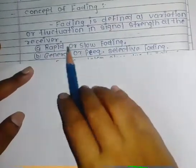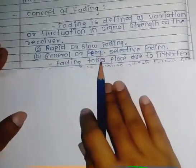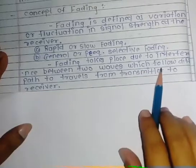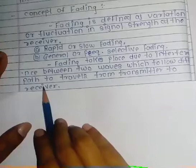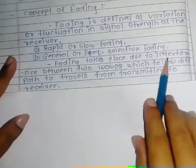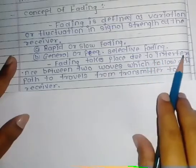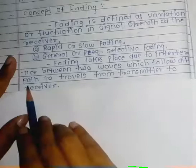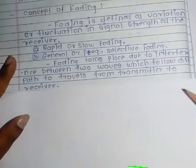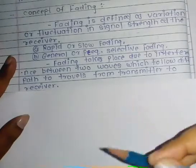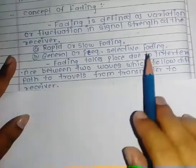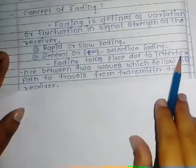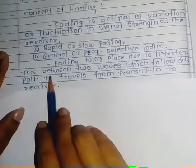There are two types of fading: rapid or slow fading, and general or frequency selective fading. Fading takes place due to interference between two waves which follow different paths traveling from transmitter to receiver. When waves do not follow the intended path from transmitter to receiver, fading occurs because of interference and disturbance between the two waves.